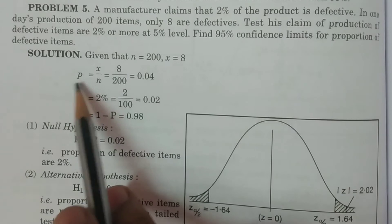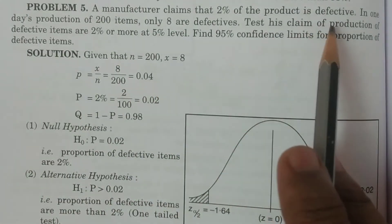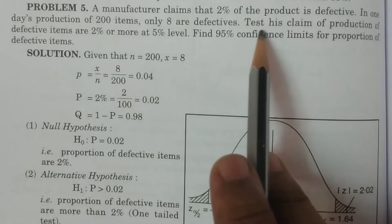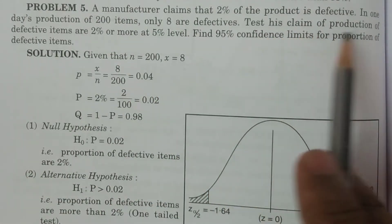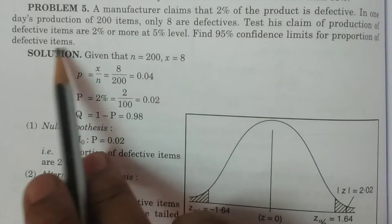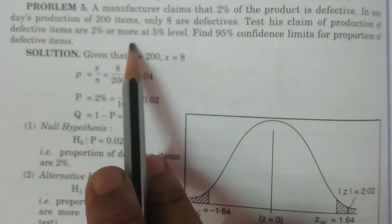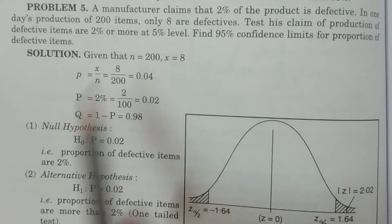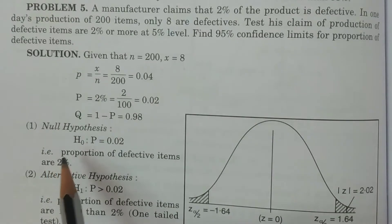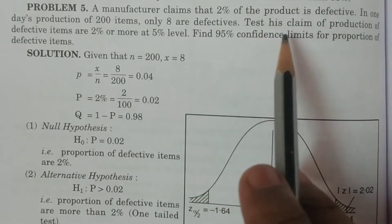You can calculate small p. The problem asks to test the claim that production of defective items are 2% or more at 5% level of significance.